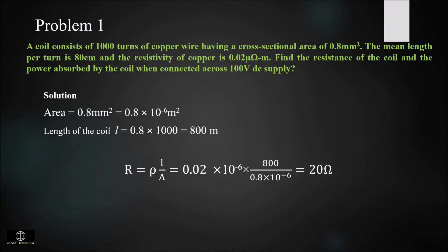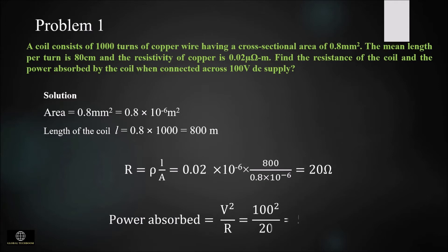The power absorbed is equal to V² / R, where V is equal to 100 volt. So 100² / 20 gives 500 watt.